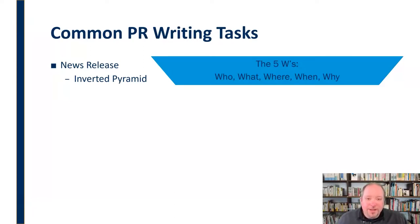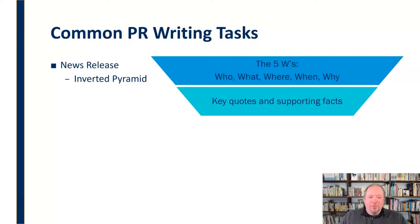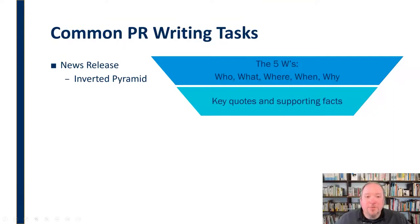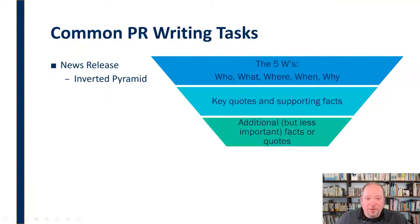The very first paragraph of your news release should include all five of the W's — who, what, where, when, and why — so that people reviewing this news release can access that information very quickly right at the very start. After that, you can include some key quotes and supporting facts, providing a little more depth beyond just the straight facts of the five W's.